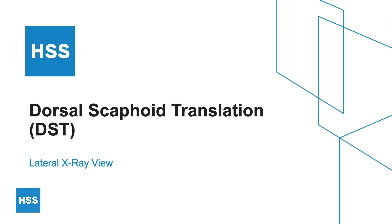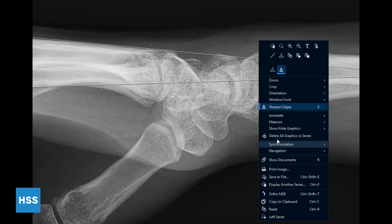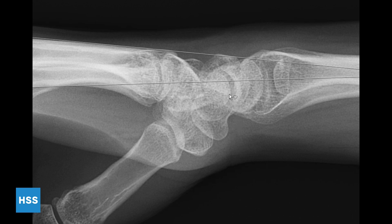The final measurement we'll be demonstrating is dorsal scaphoid translation (DST), which is a useful radiographic parameter for scapholunate dissociation and is associated with post-operative wrist pain. Begin by using the annotate tool to draw a circle around the proximal pole of the scaphoid. The proximal pole should appear round and smooth, in contrast with the triquetral tubercle, which has a characteristic ridge and is often confused with it.